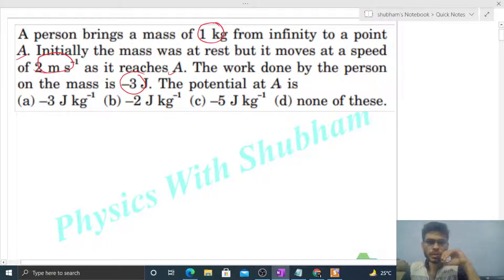The potential at A is... So we have a body of mass 1 kilogram. Initially it was at infinity, and there's a point A where we need to bring it. There is a person who applies a force, let's say capital F, and this body moves from infinity to point A. This capital F is the force exerted by the person who brings it from infinity to point A.